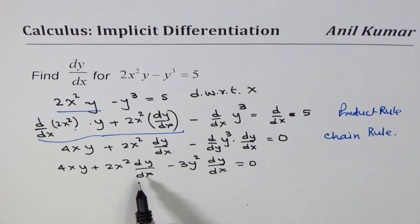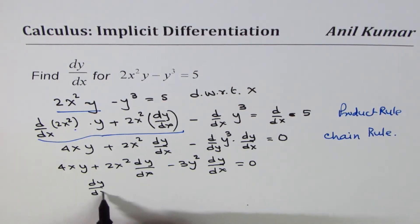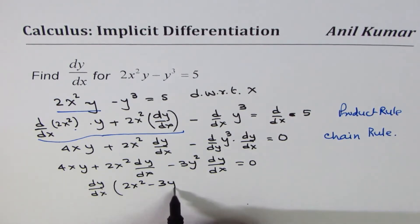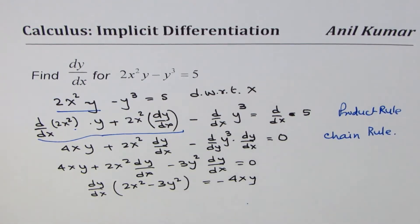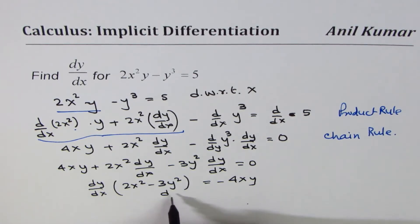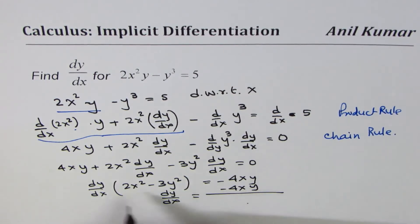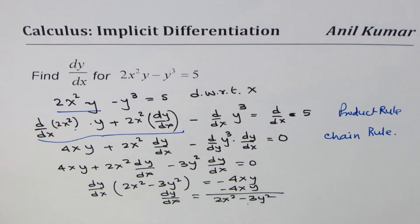Now you can take dy/dx common and bring 4xy to the right side. So we get dy/dx times (2x squared minus 3y squared) equals minus 4xy. Now we can find dy/dx: dy/dx equals minus 4xy divided by 2x squared minus 3y squared. That is how you can differentiate the function implicitly.